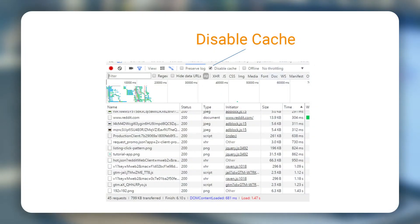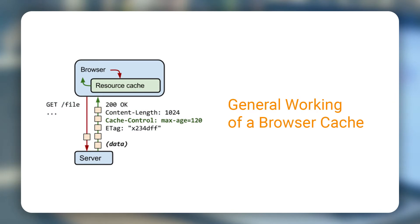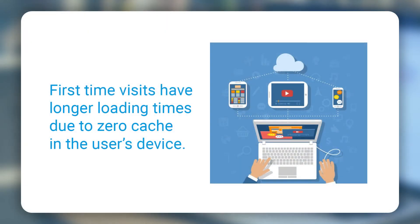In addition, the disable cache checkbox should be selected. This removes any kind of caching that can happen when you refresh or reload the page to calculate the time it takes to load it. This is done because when a user visits a website for the first time, there are exactly zero assets that are cached from the site.